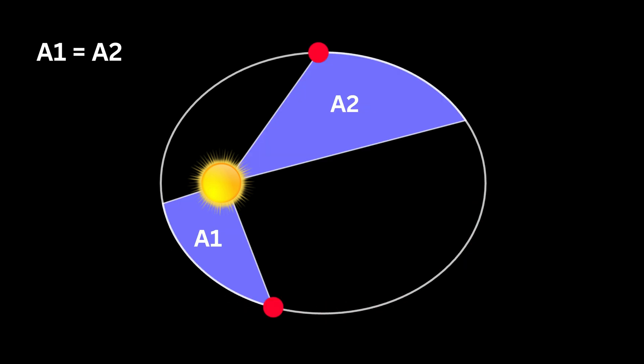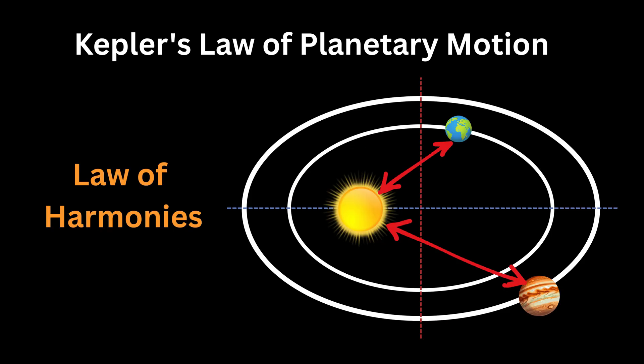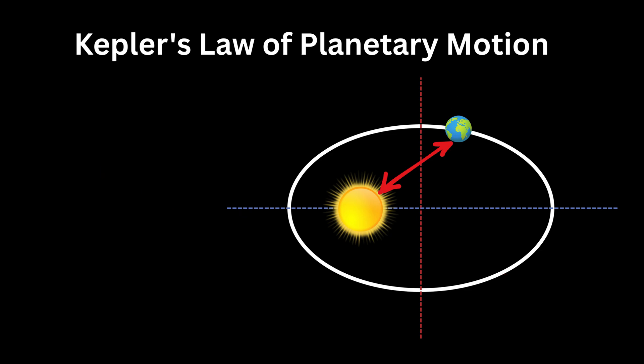Third Law: This law is also known as the Law of Harmonies. It states that there is a simple mathematical relationship between how long a planet takes to complete one orbit and how far on average it stays from the sun. In simple terms, if T stands for the orbital period, which is the total time a planet takes to complete one full revolution around the sun,